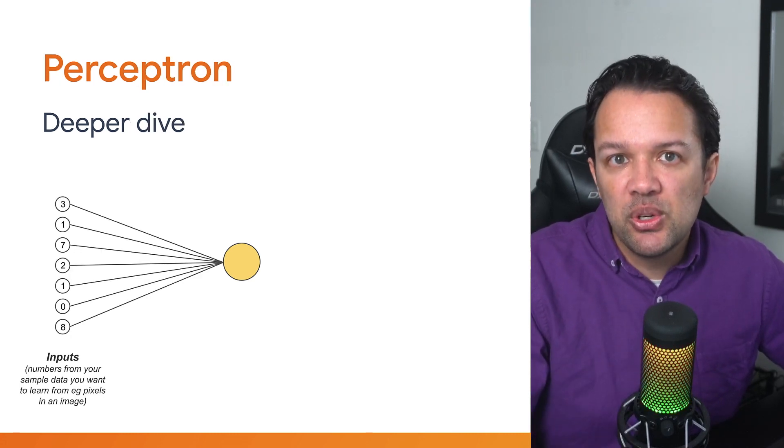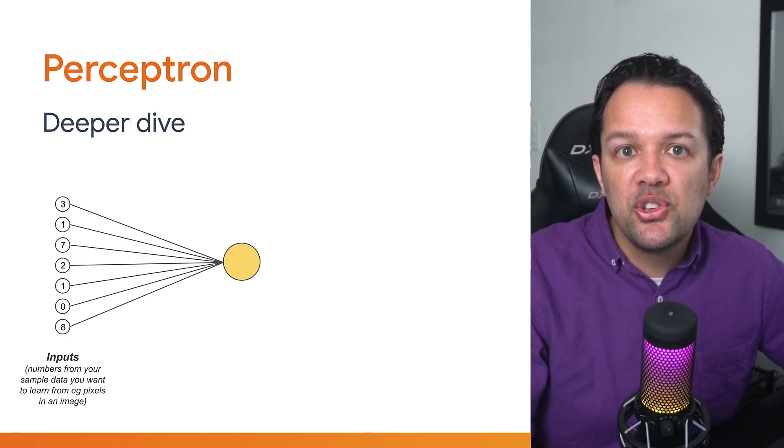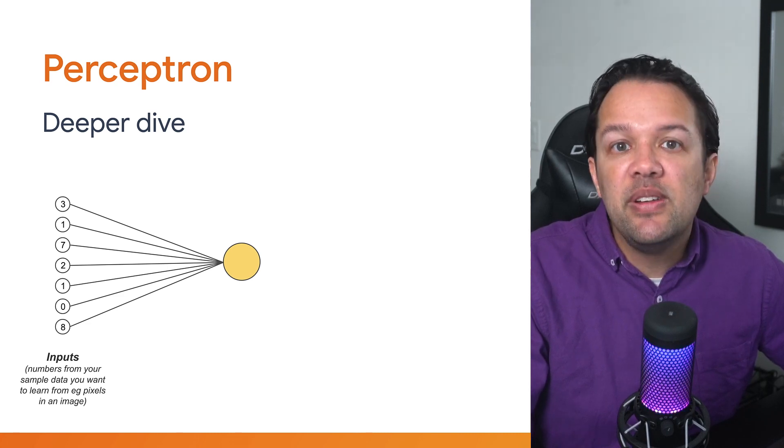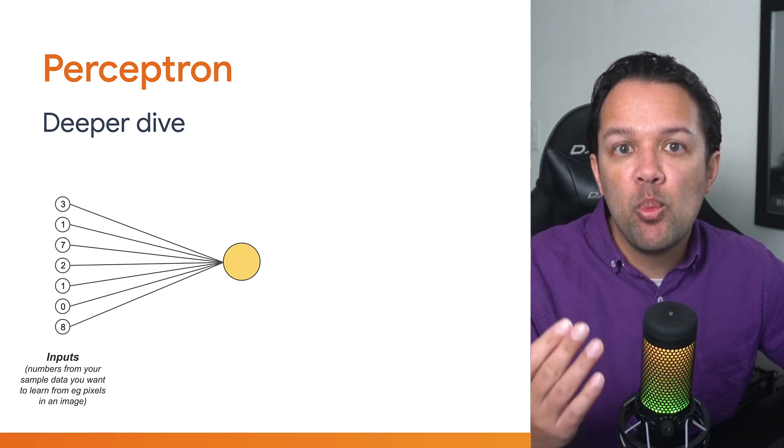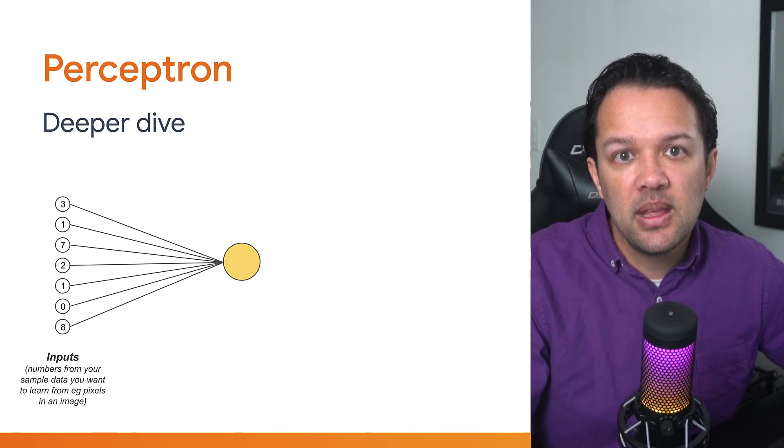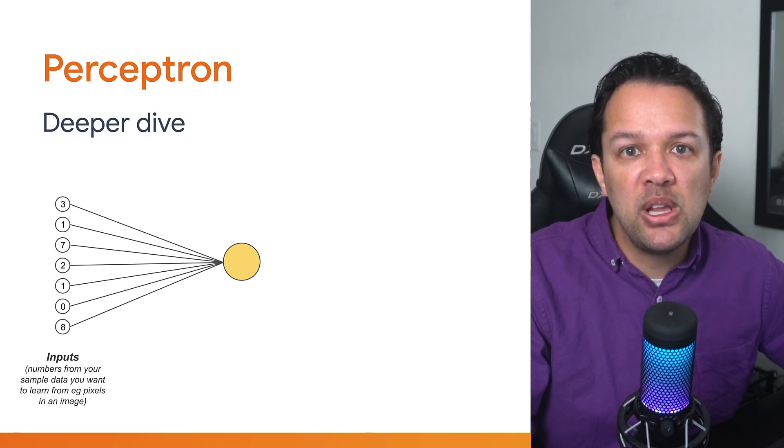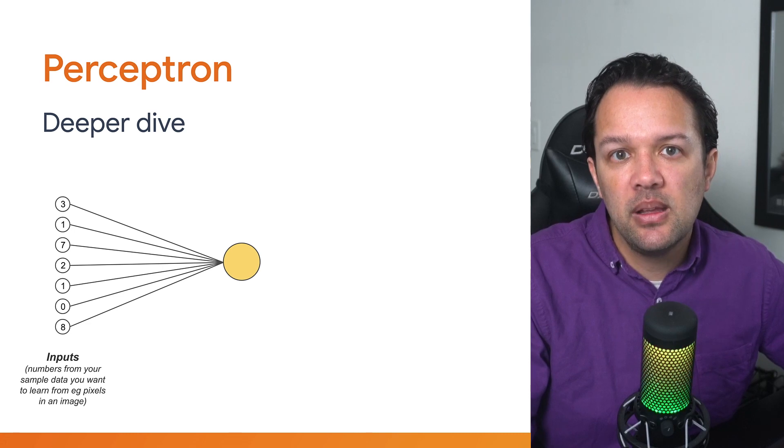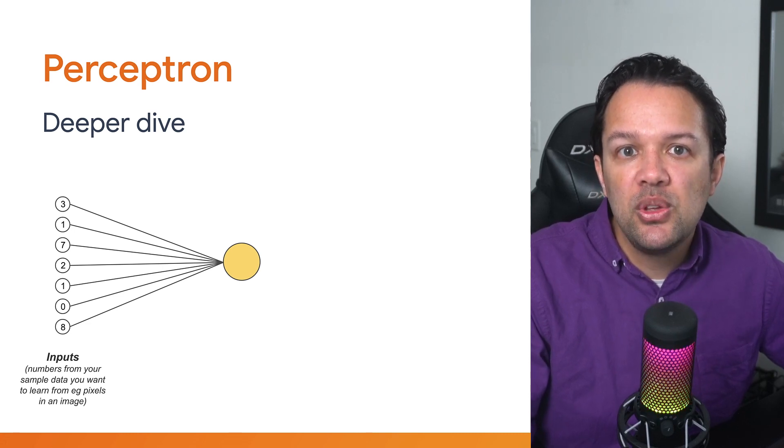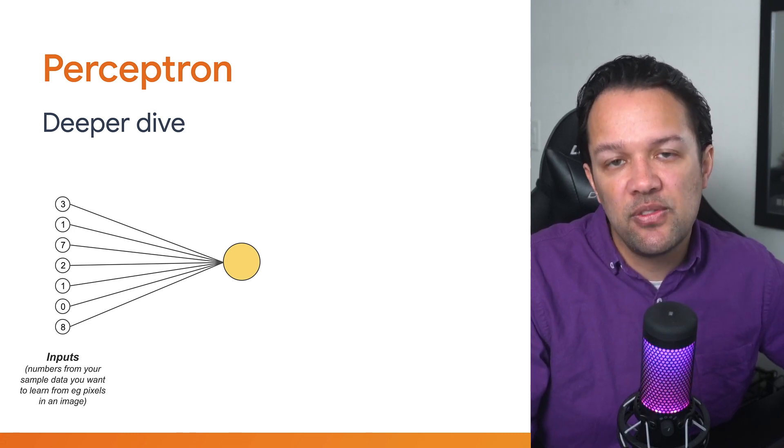First this artificial neuron will sample some inputs, just like the neurons in the brain did. These inputs however are always numerical, and each input here essentially represents a feature from one item in your training data. Typically inputs are normalized to have values ranging from zero to one, so that they can be compared in a more relative way. But for this explanation, you'll see me use whole numbers to make it easier to follow along.